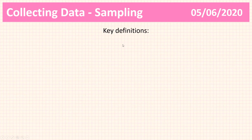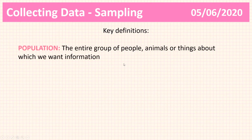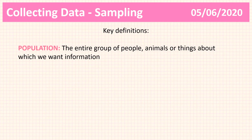Before we do anything, we're going to come up with some key definitions you need to understand before we move forward. The first keyword is population. The population is the entire group of people, animals, or things that we want to find information about. For example, the population of a jungle would be all the animals in the jungle. It doesn't have to be living things — it can be anything we want to analyse. That is called the population when we include everything.